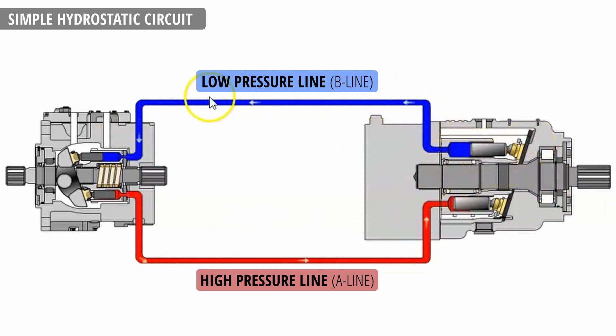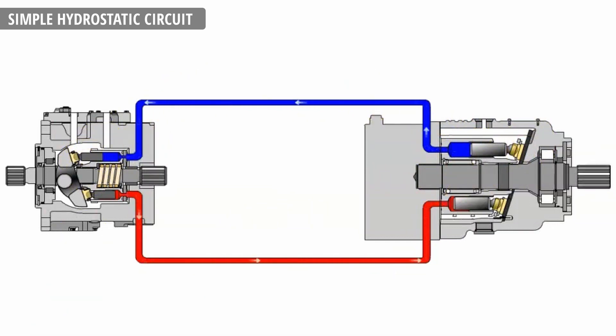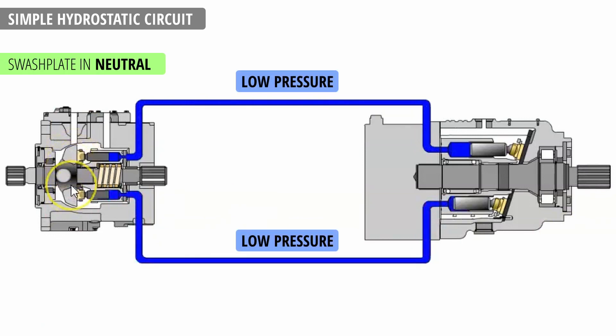The blue line at this point is just oil returning to the suction side of the pump. If we move the joystick back to neutral, swash plate moves back and the pump stops pumping the oil, stopping the motor.